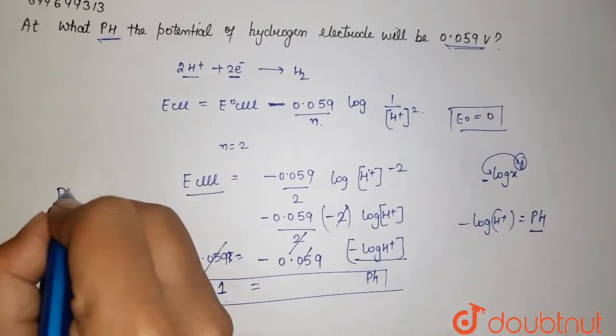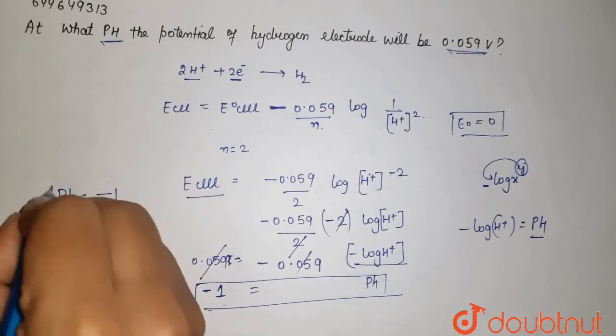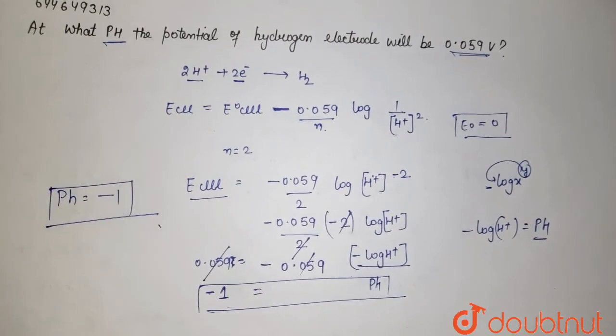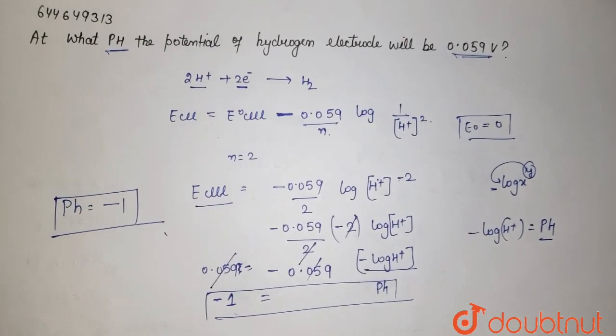so the pH comes out to be -1. Therefore, the answer is -1.